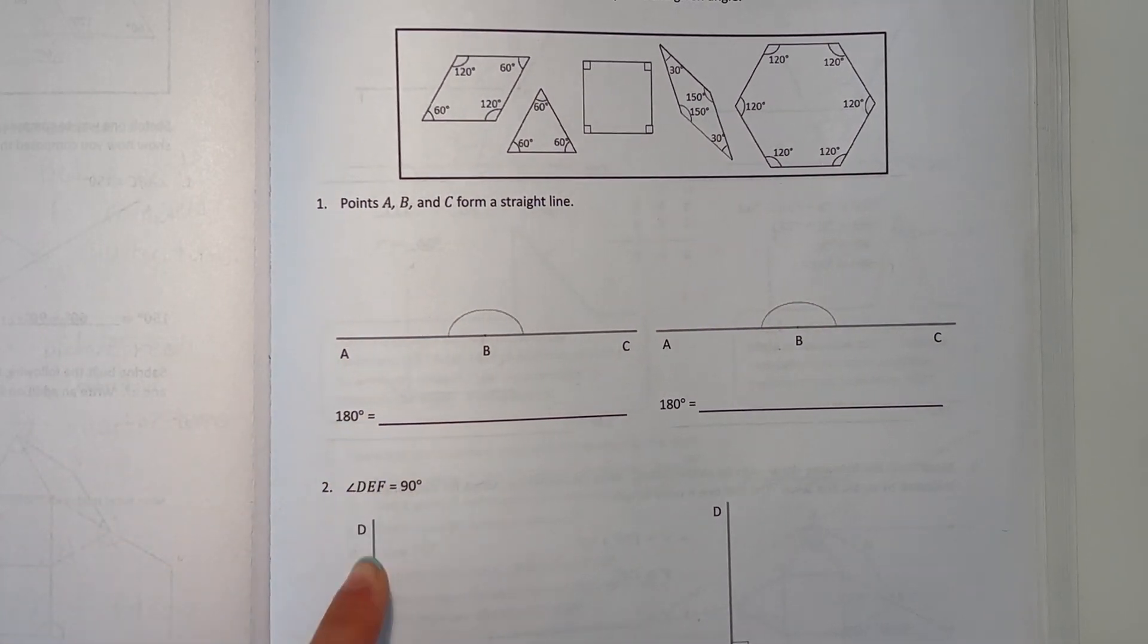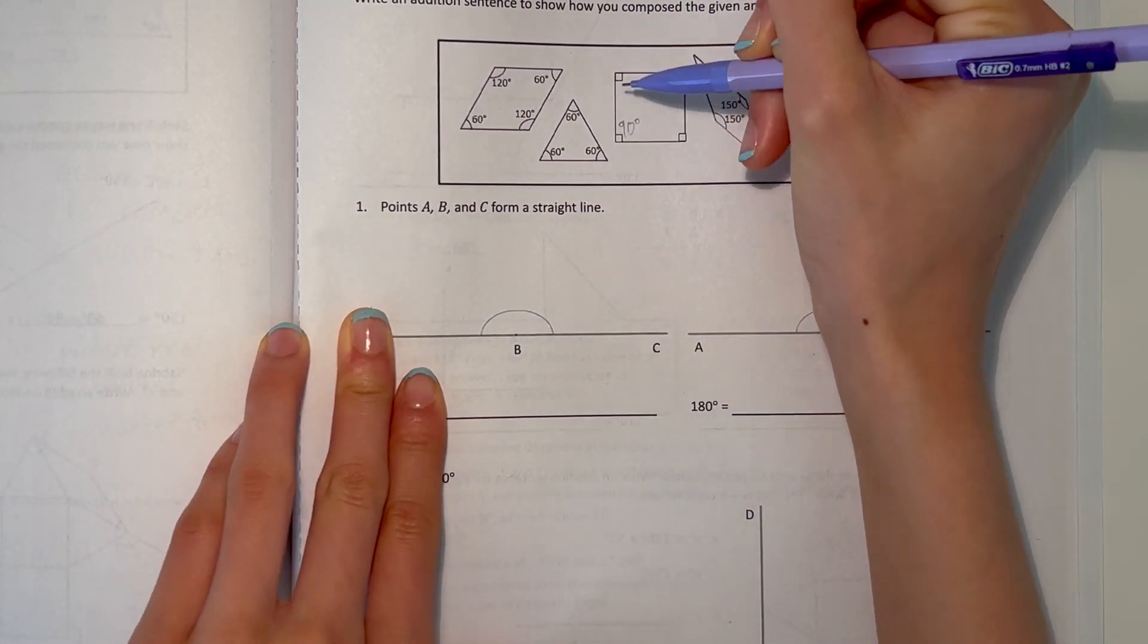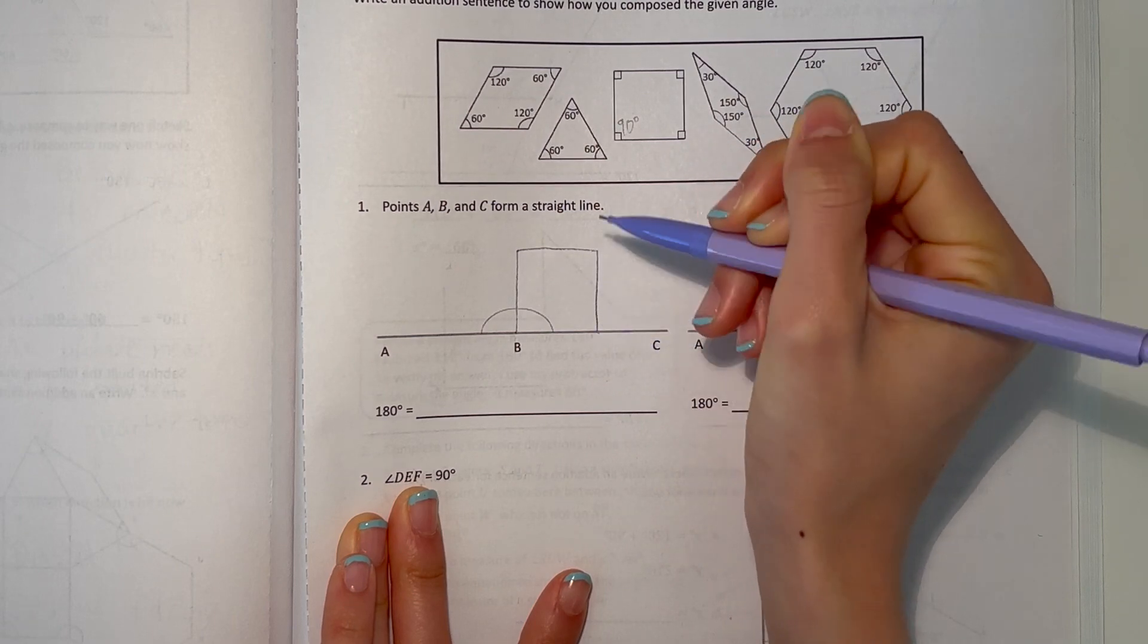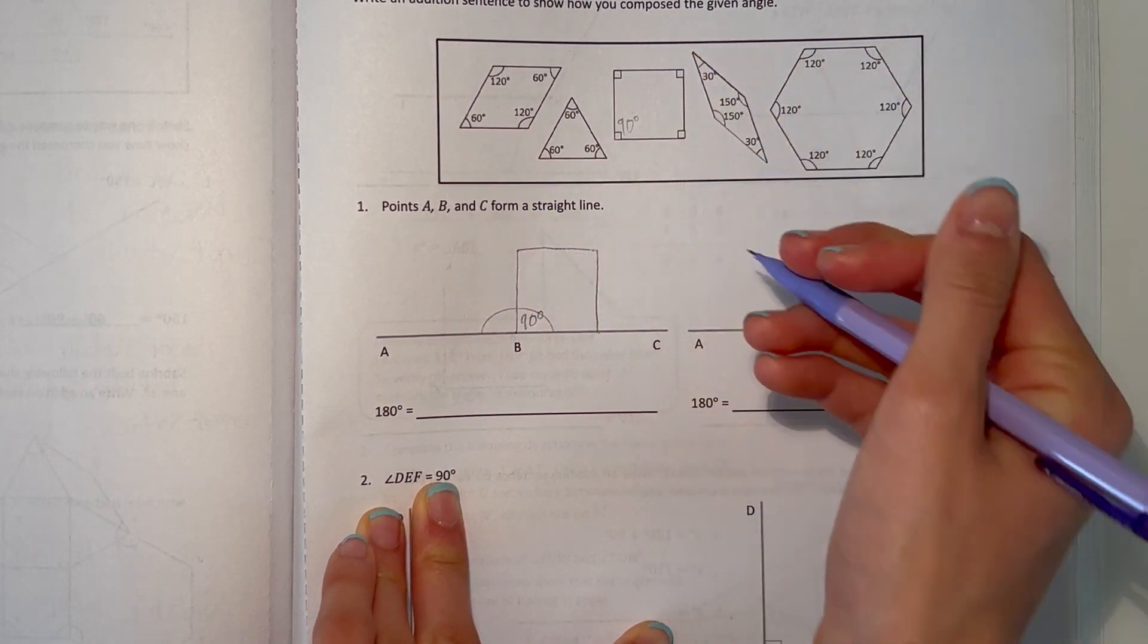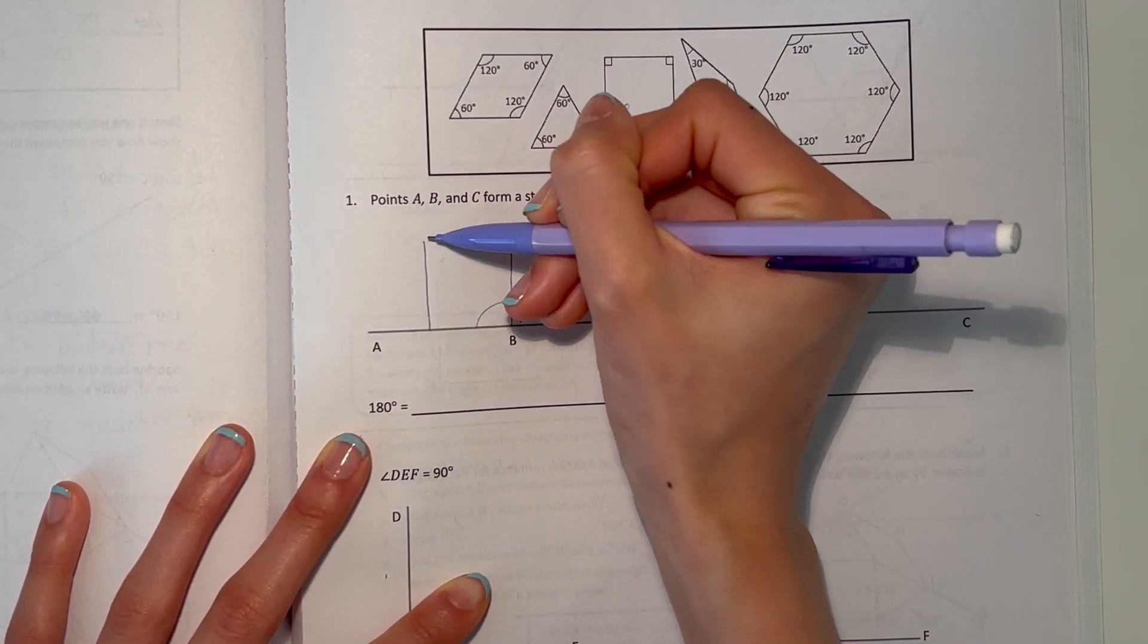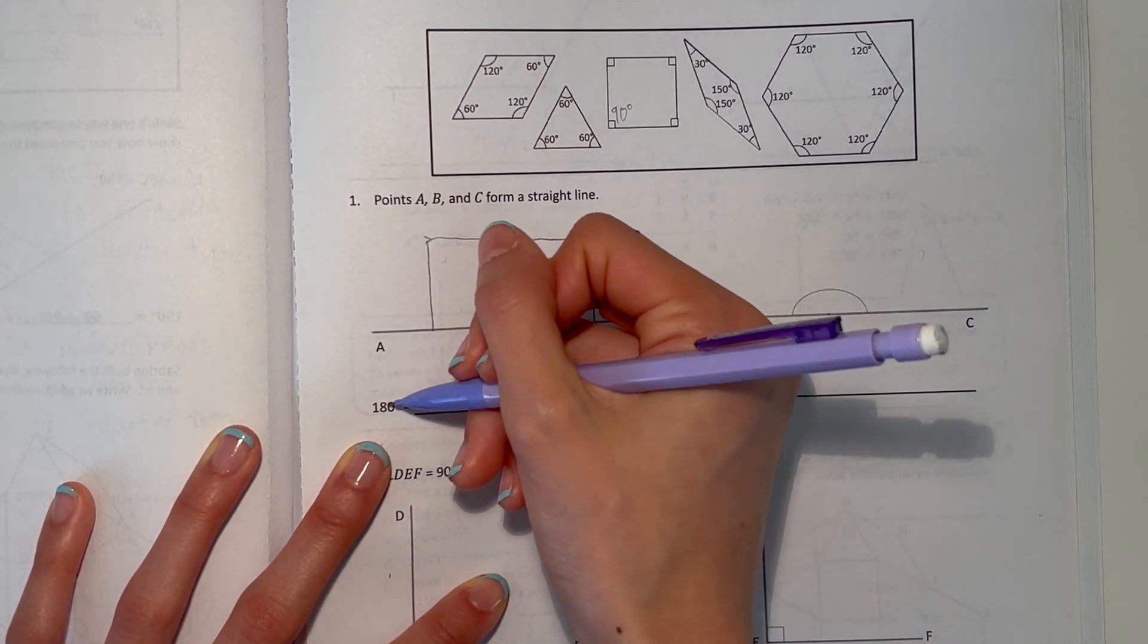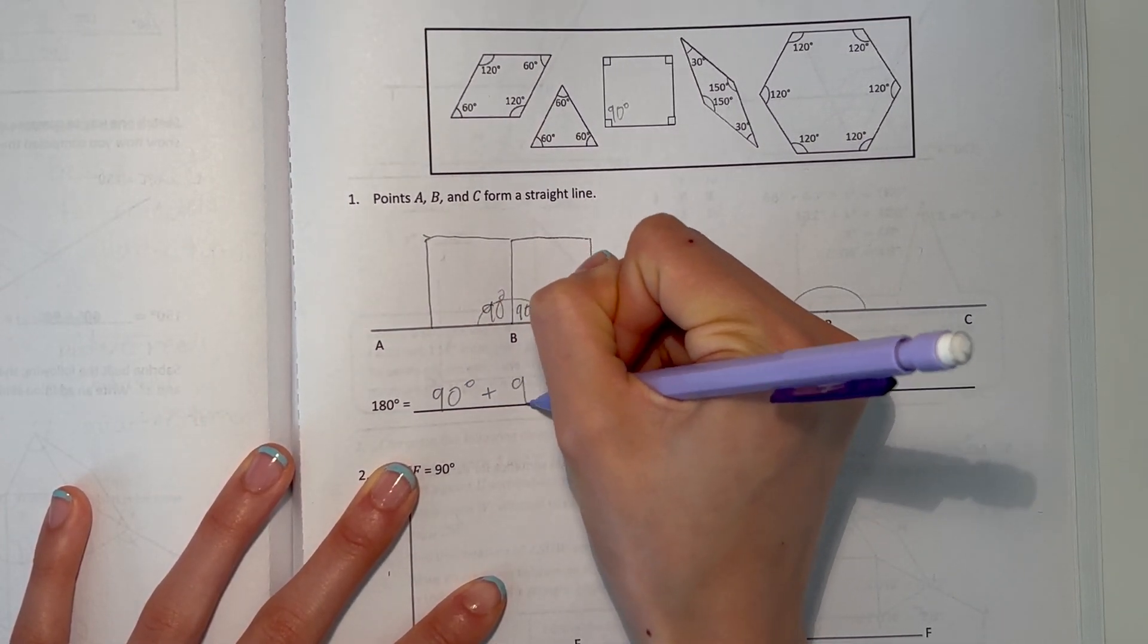So let's start off. This one is 90 degrees because it's a right angle. So this much is 90 degrees and that only leaves us 90 degrees more to fill in. Then another one here is also 90 degrees. And 90 plus 90 is 180. So this makes a straight line. 180 degrees equals 90 degrees plus 90 degrees.